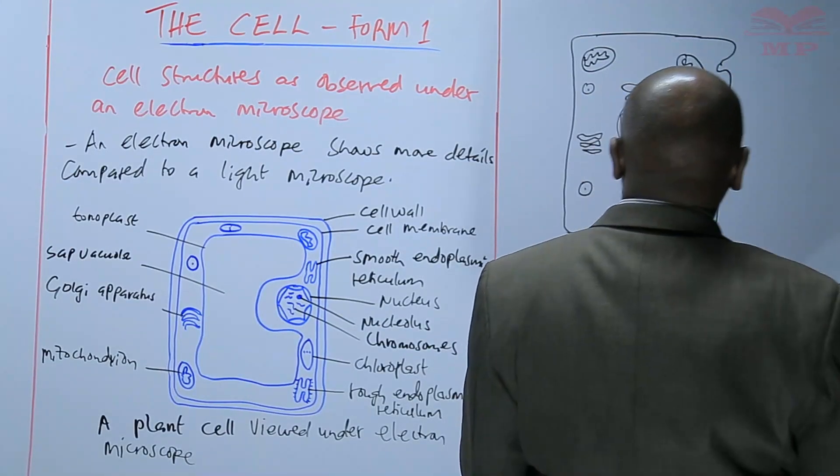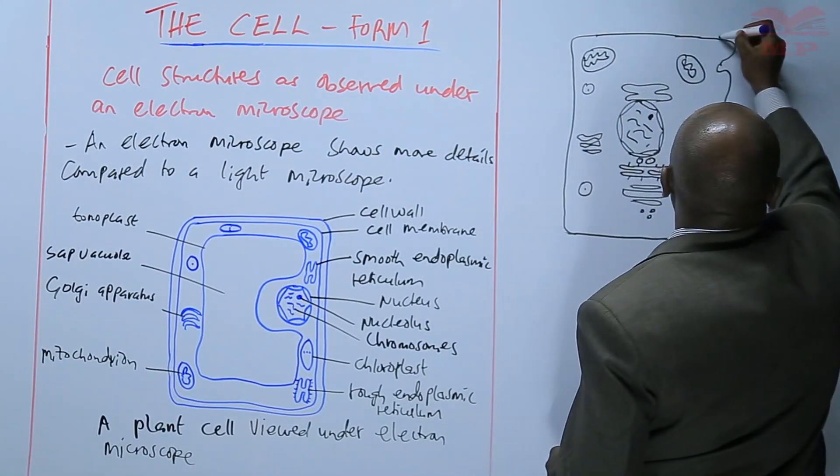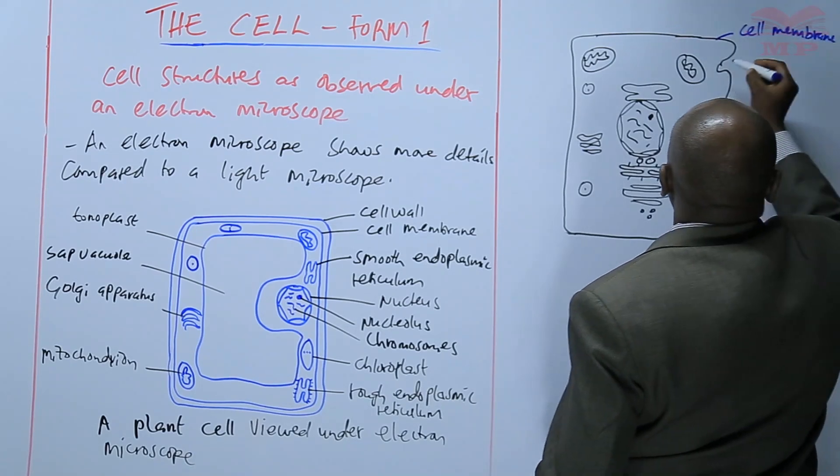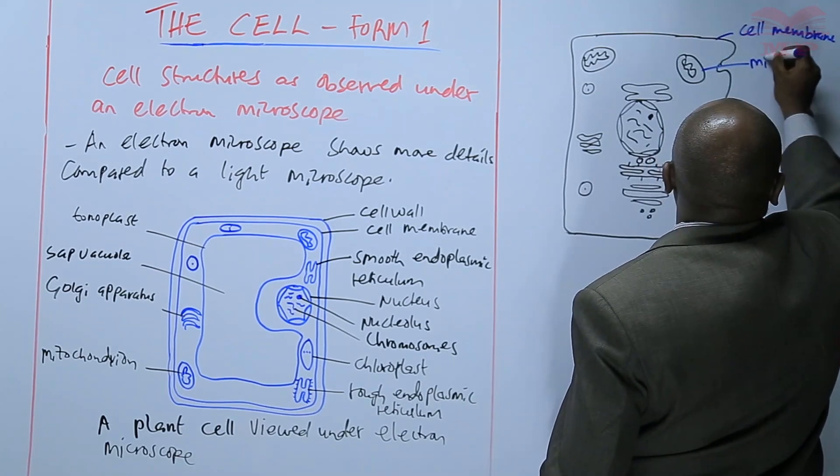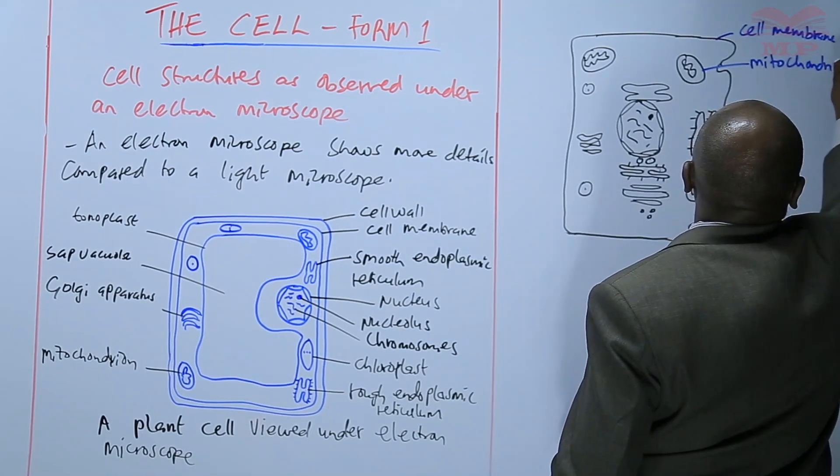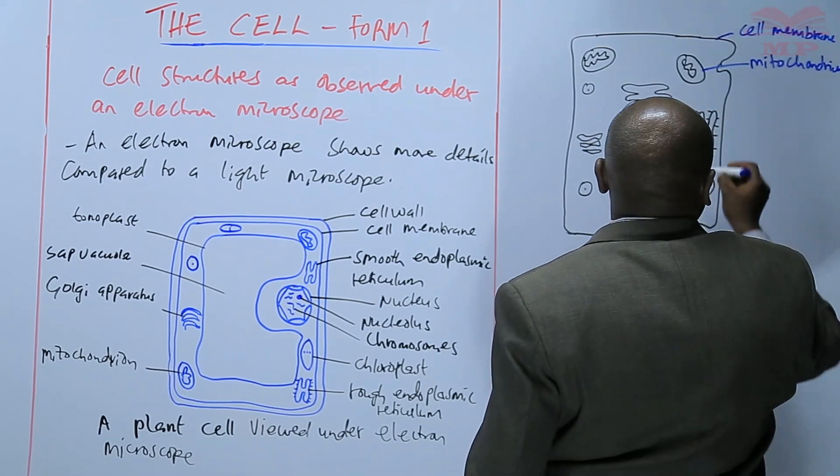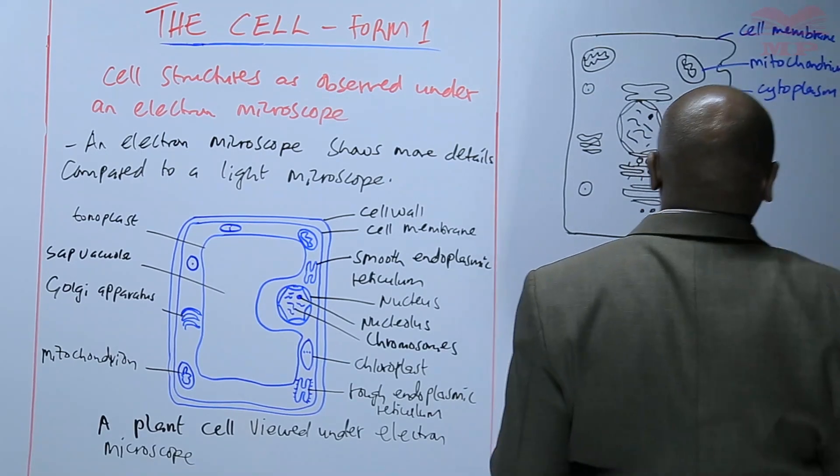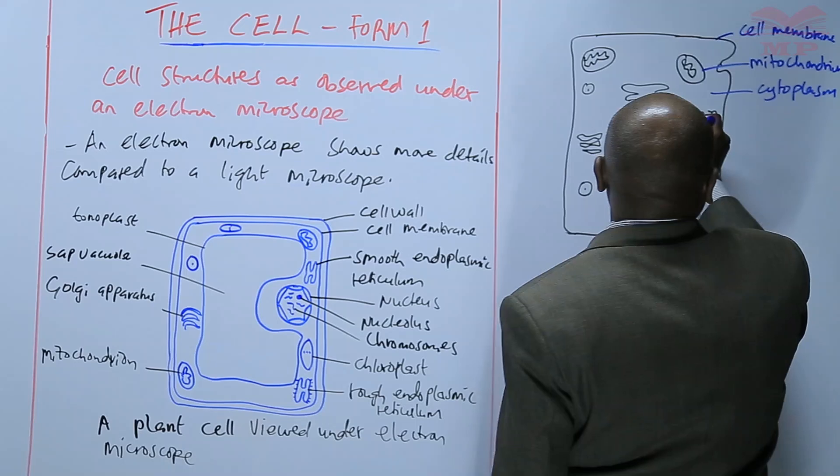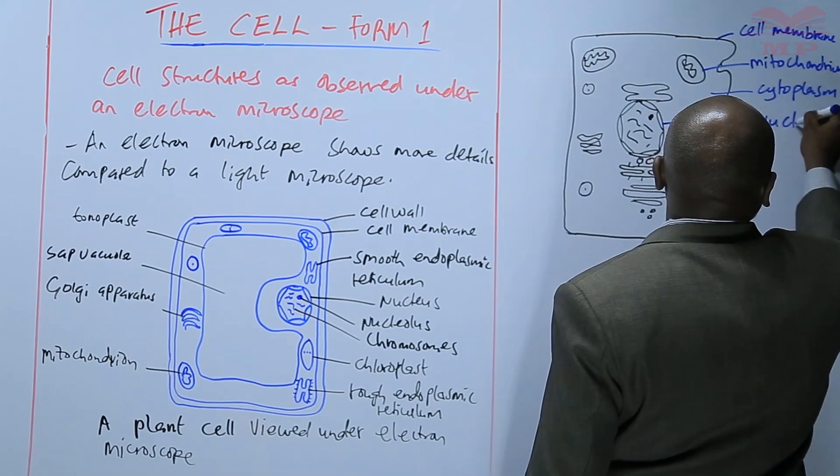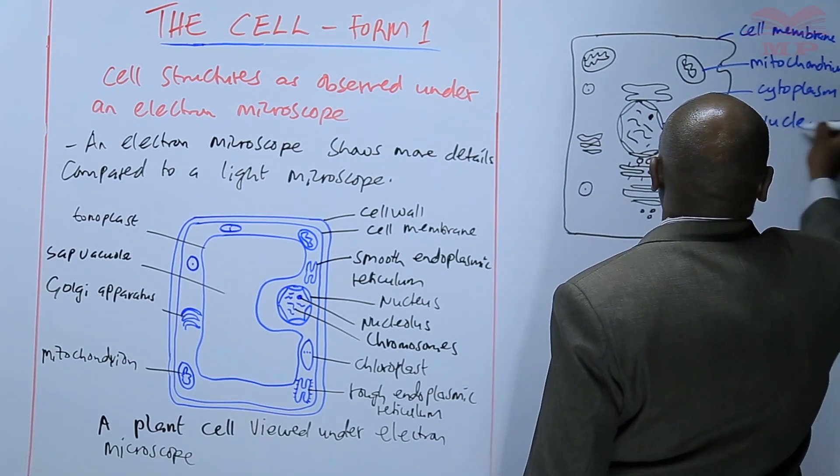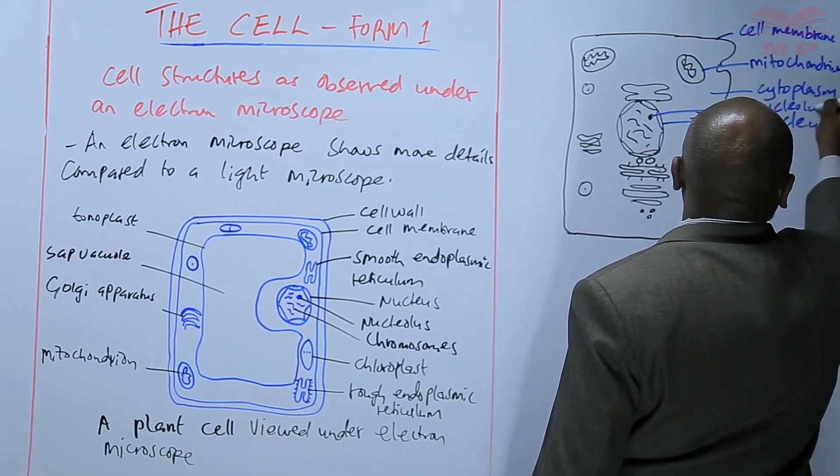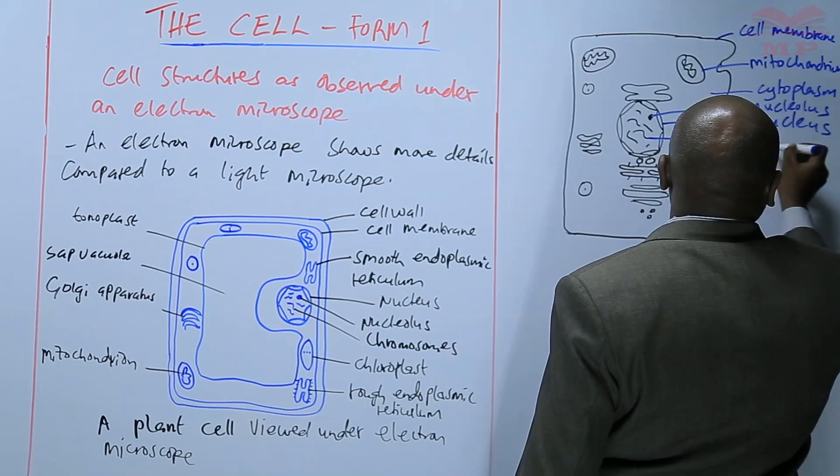So on the animal cell we have the cell membrane, mitochondrion, cytoplasm. We have the nucleus, the nucleus having the nucleolus and also the chromosomes.